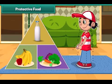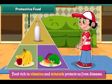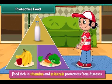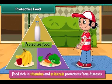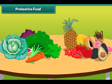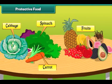Food rich in vitamins and minerals protects us from diseases. Therefore it is called protective food. Green leafy vegetables such as spinach and cabbage, carrots and fruits have lots of vitamins and minerals.